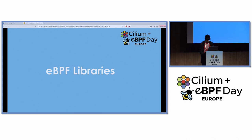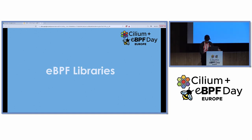In terms of libraries, Falco uses libbpf, which is the standard BPF library in the kernel, and it has its own libscap library for system capture. Tracee uses libbpf as well, through a separate Go wrapper called libbpf-go. Tetragon uses the pure Go Cilium eBPF library, so if you need pure Go code without cgo and C code dependencies, that's the way to go.